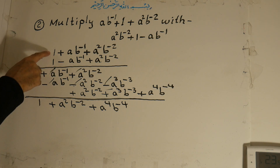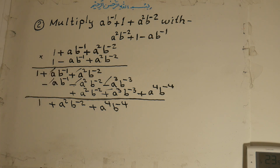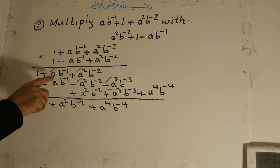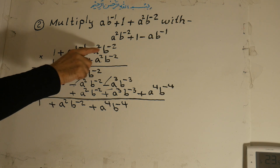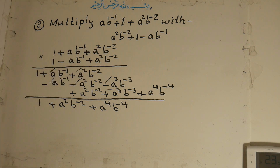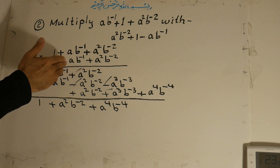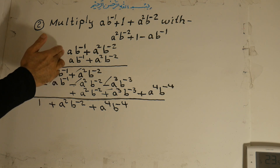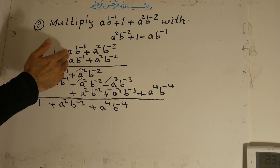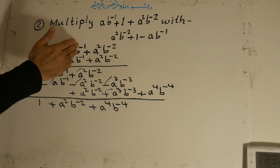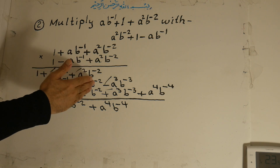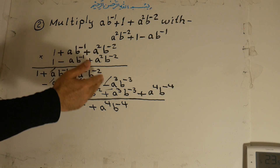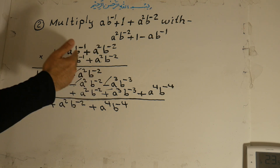Then we multiply the first term with all of the second. 1 times 1 is 1. 1 times ab to the power of negative 1 is ab to the power of negative 1. Positive times positive is positive — 1 times a to the power of 2 b to the power of negative 2 is a to the power of 2 b to the power of negative 2. Then the second term: negative times positive is negative — ab to the power of negative 1 times 1 is ab to the power of negative 1. Negative times negative is positive — a to the power of 2 b to the power of negative 2. Negative times positive is negative — a to the power of 3 b to the power of negative 3.